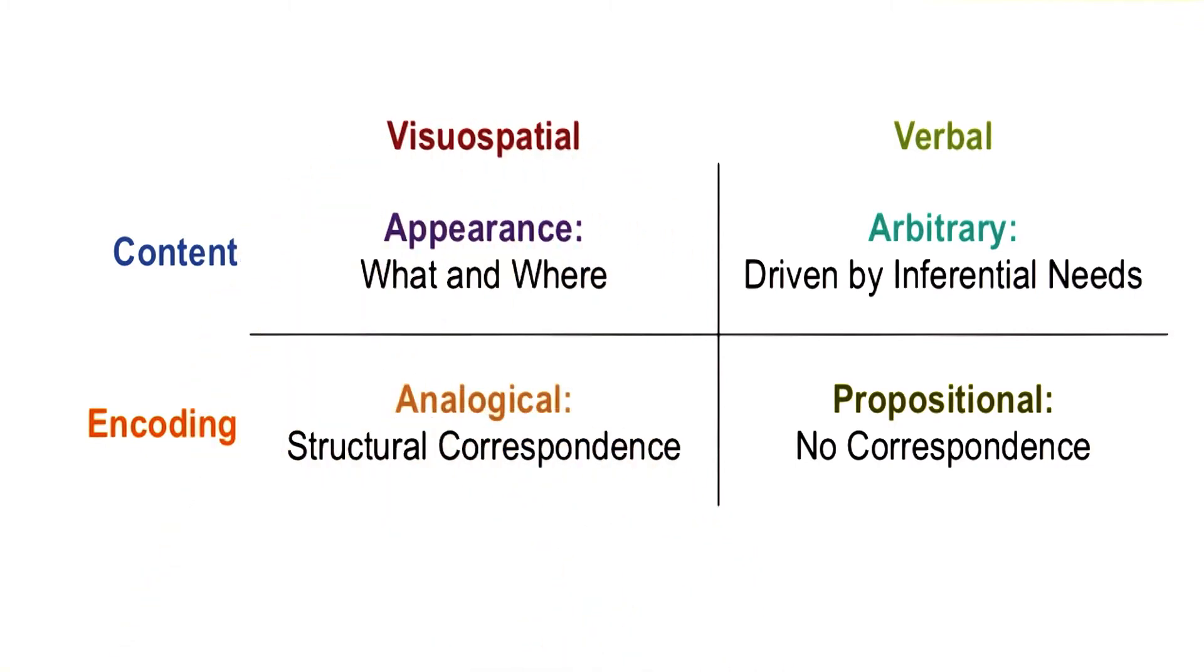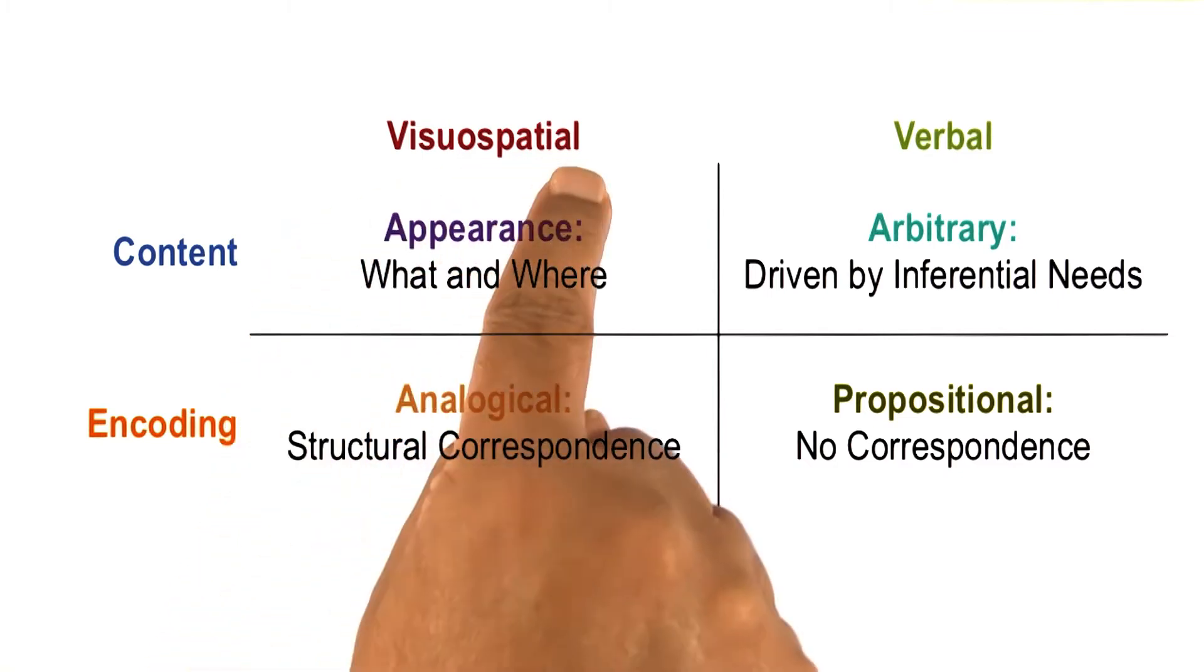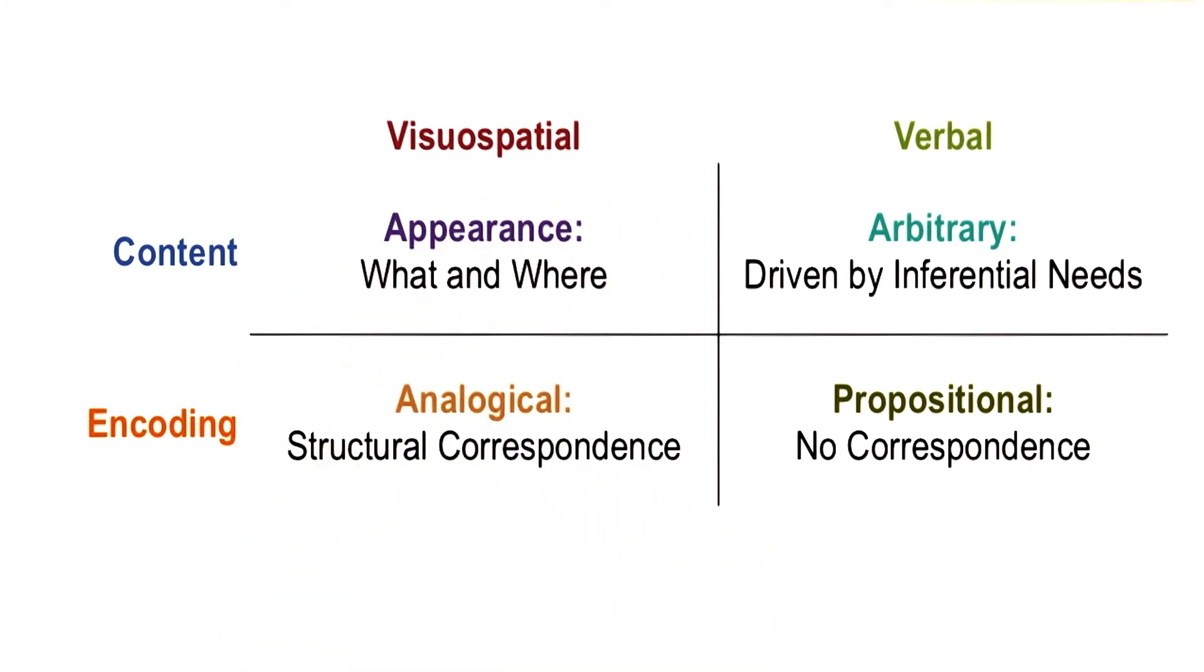And the encoding for visual-spatial knowledge could be either analogical or propositional. In analogical encoding of visual-spatial knowledge, there is a structural correspondence between the encoding and the external world that is being represented. In the propositional representation of visual-spatial knowledge, there is no such correspondence.